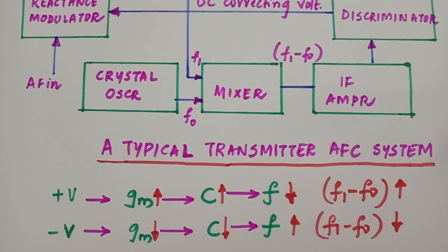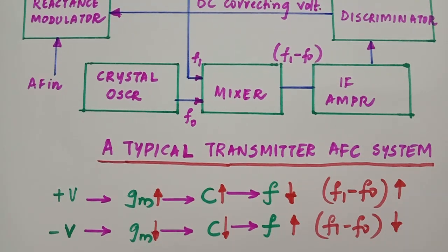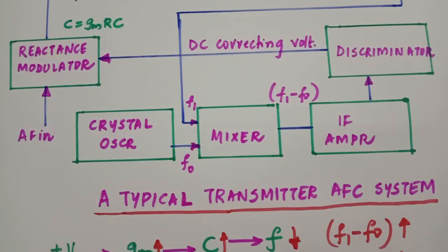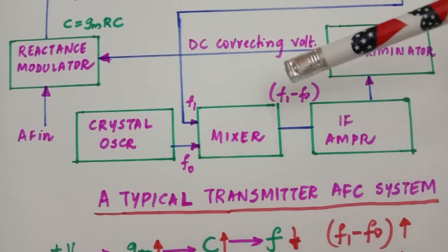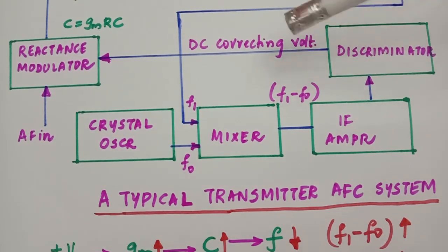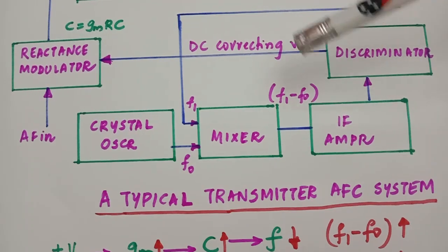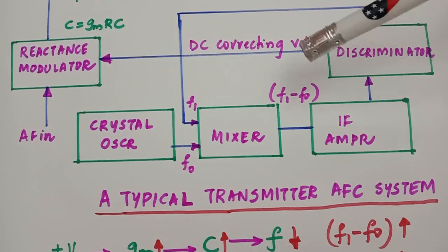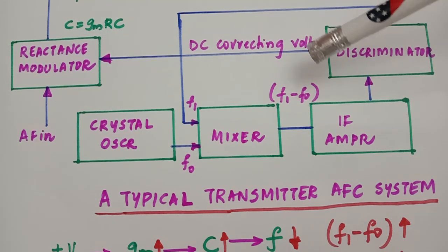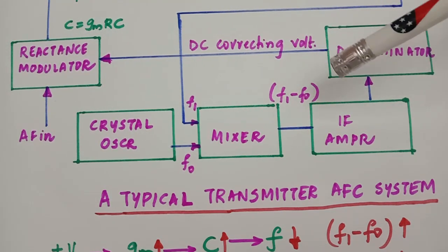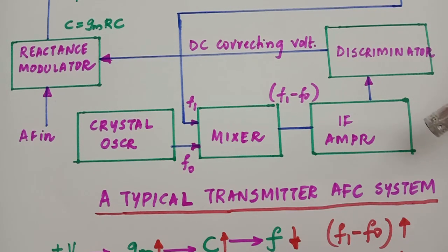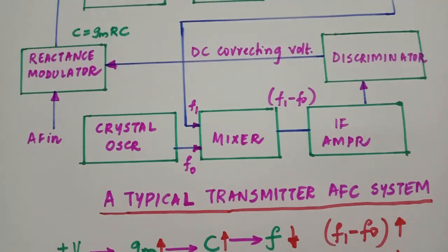The varactor diode can also be used in an AFC system. Instead of giving the correcting voltage to the reactance modulator, you can give it to a varactor diode placed in parallel with the tank circuit of the master oscillator, and it can also correct frequency drifts in the LC oscillator. In today's lecture we have seen the need for an automatic frequency control system and explained the block diagram of a typical transmitter AFC system.